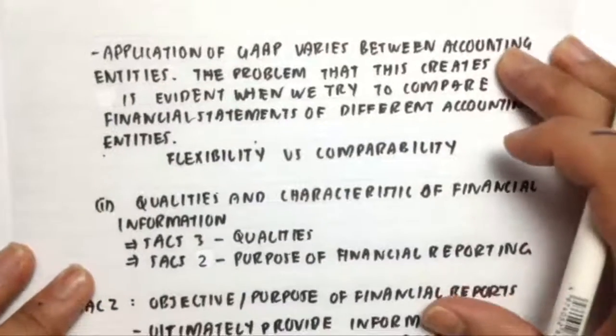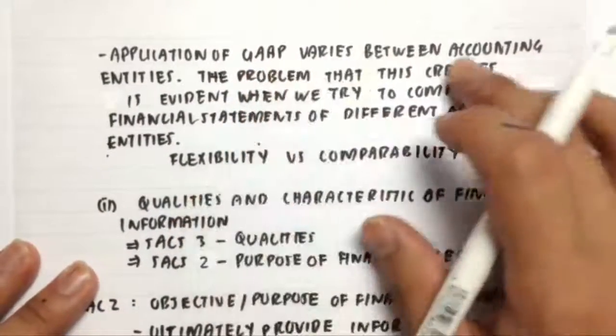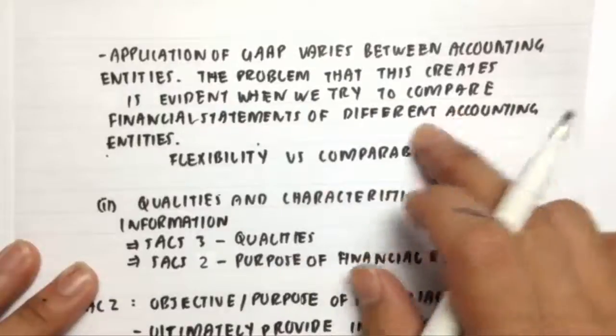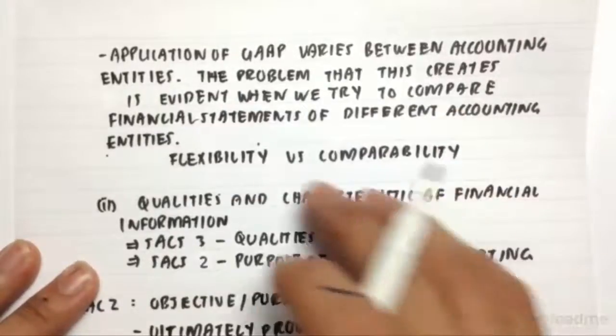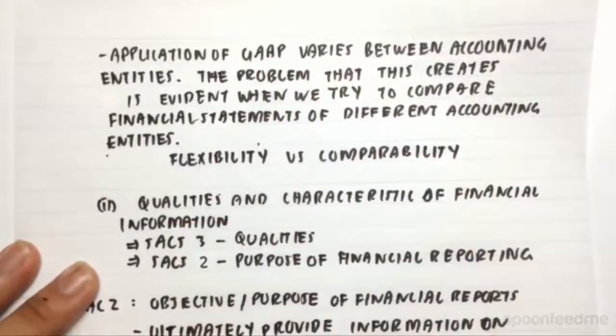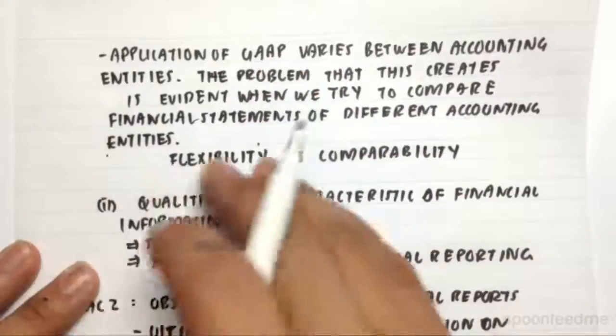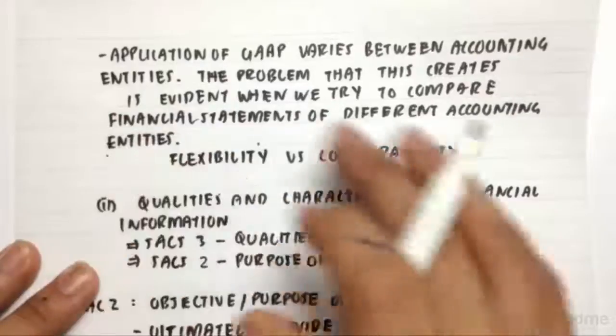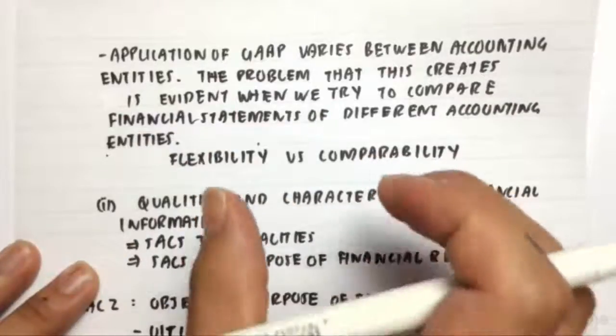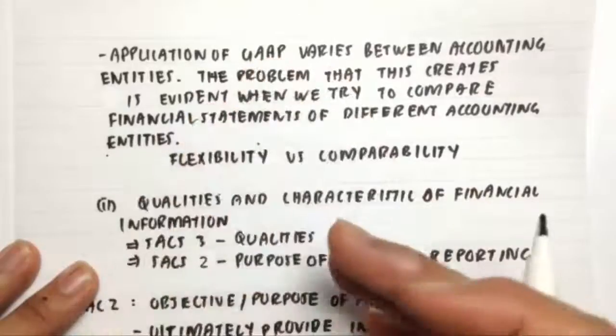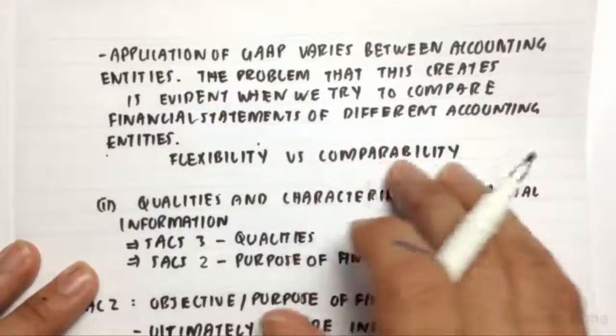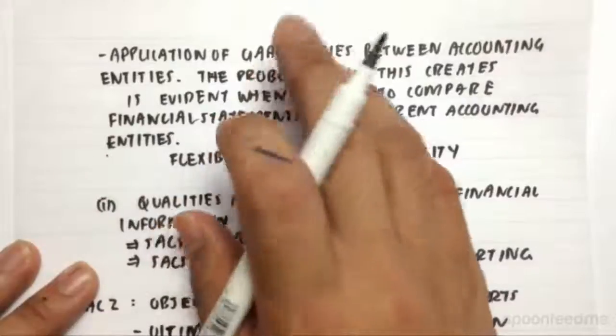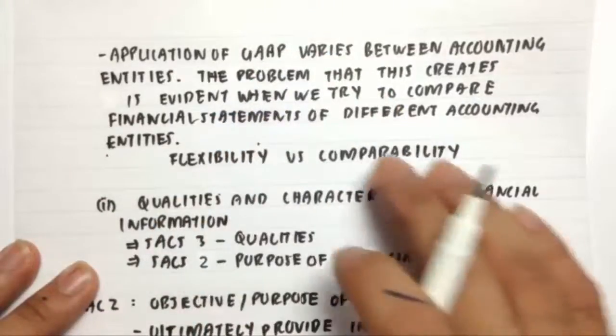So the application of generally accepted accounting principles varies between accounting entities. The problem that this creates is evident when we try to compare financial statements of different accounting entities. Because they use accounting principles differently, it makes this really hard for us to compare. So we need to strike a balance between giving accounting entities flexibility to use these accounting principles, but also we need to be able to compare them at the end of the day.